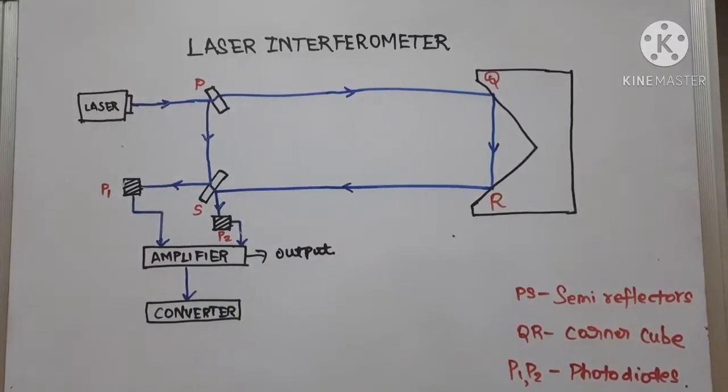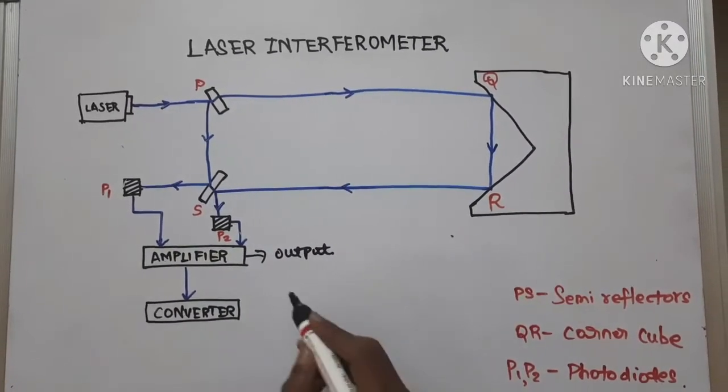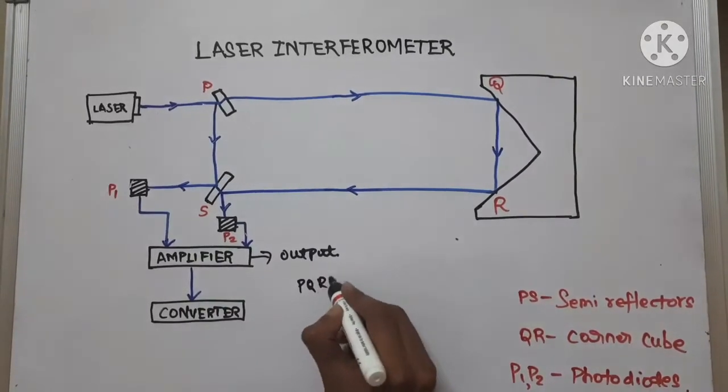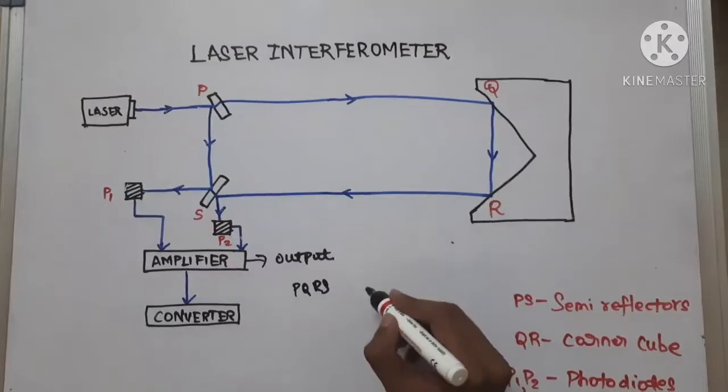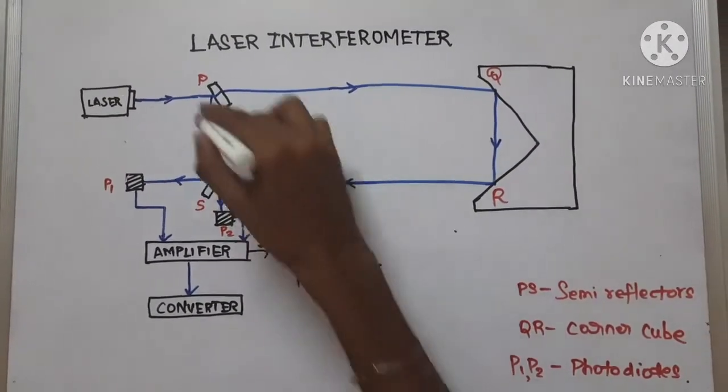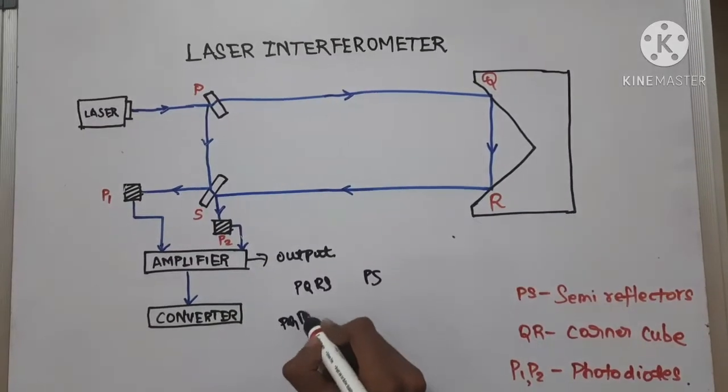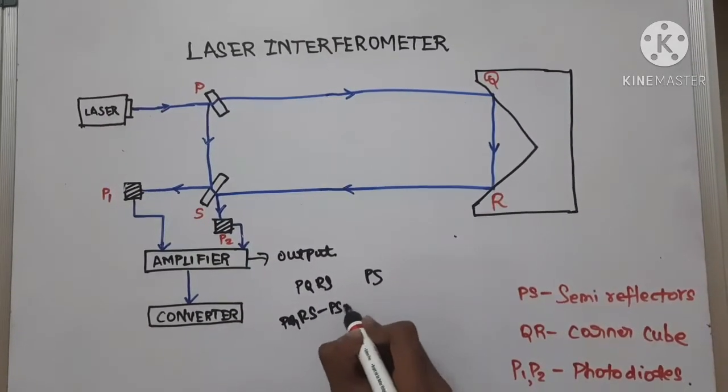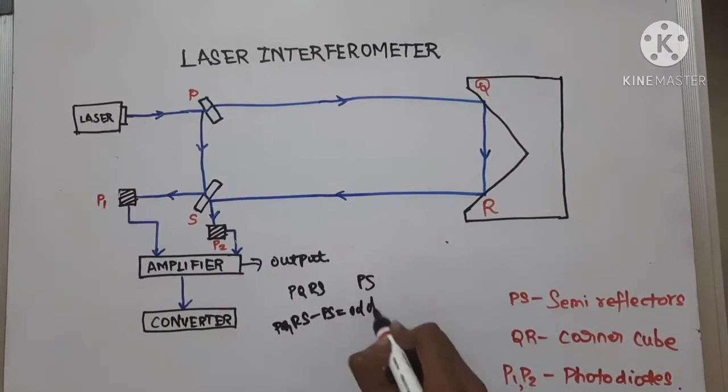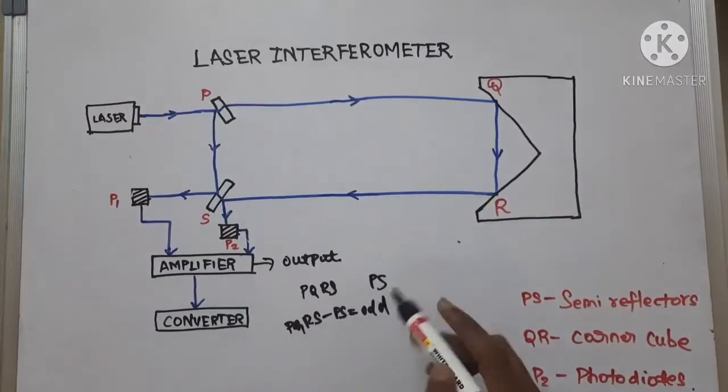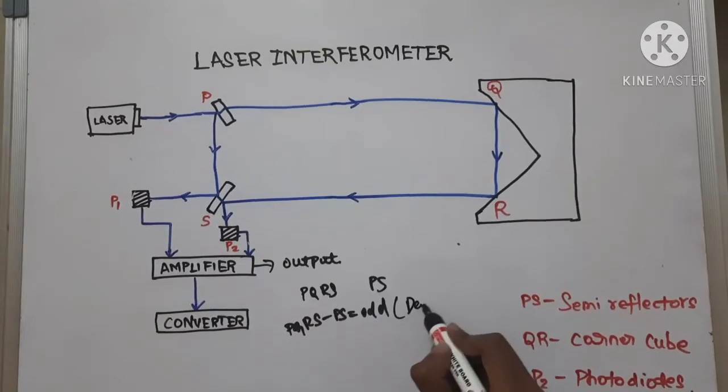So in case of calculating the fringes, we have a path difference PQRS and another path PS. So in case of calculating the fringes, PQRS minus PS, if this number is an odd number, if the difference between this path difference PQRS and PS is an odd, then we get dark fringes.